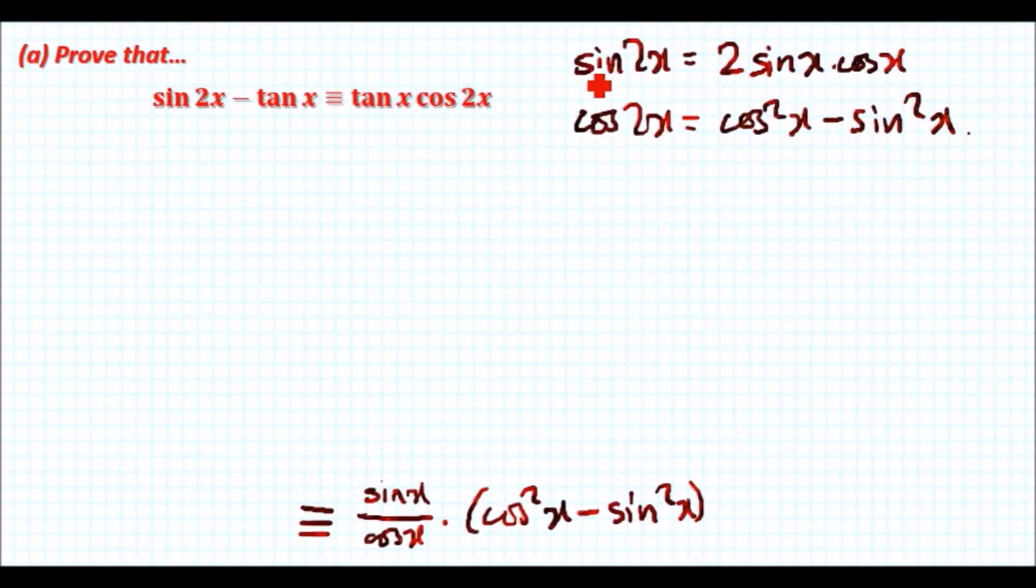On the left hand side if we expand this, sin 2x only has one definition thankfully, so it'll be 2 sin x cos x minus tan x would be sin x over cos x. So far so good.